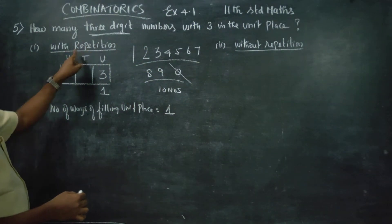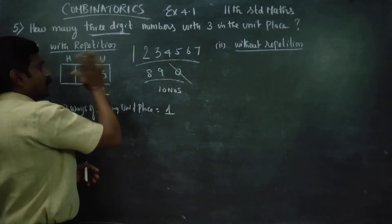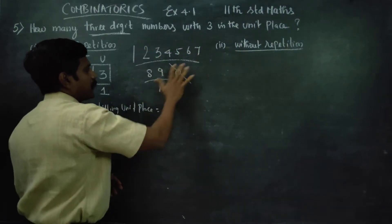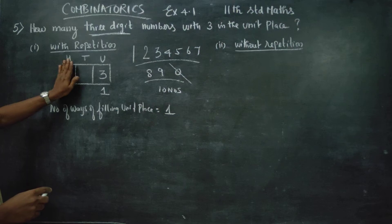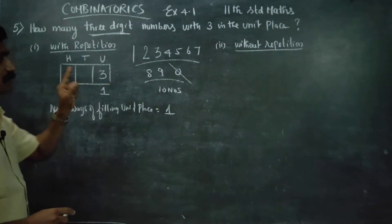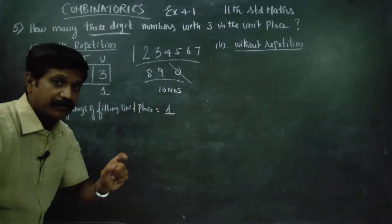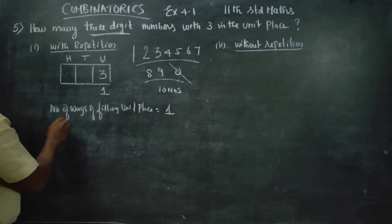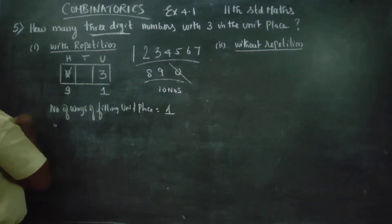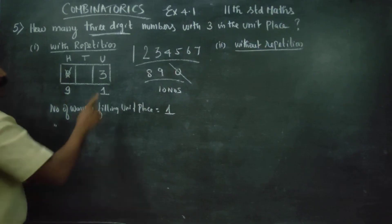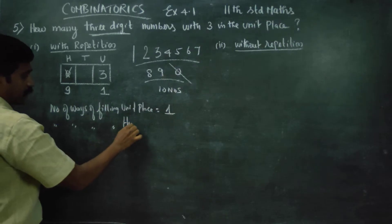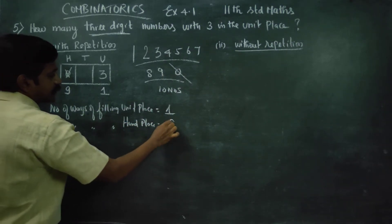With repetition: in the hundreds place, zero is not allowed. So from the 10 available digits, removing zero leaves 9 digits. Therefore, the number of ways of filling the hundreds place is 9.